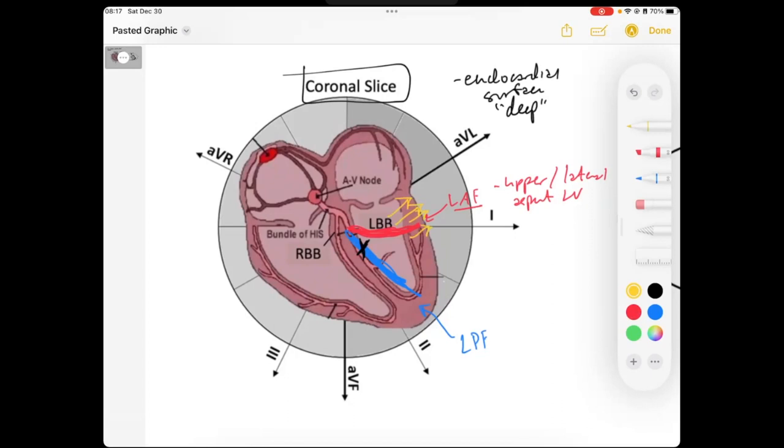So these fibers are running around, they're wrapping around, but they're wrapping around the endocardial surface. And so when they do fire, they're going to fire laterally through the rest of the myocardium.